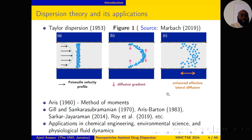Dispersion theory has many applications in chemical engineering — one can think about chromatographic separation, the transport of pollutants and contaminants in the atmosphere and in our water bodies, environmental science, and of course for us, the transport of nutrients and medicine in our bloodstreams — so in the context of physiological fluid dynamics.